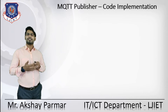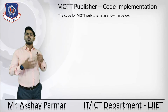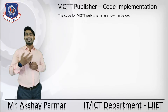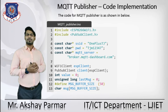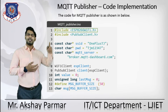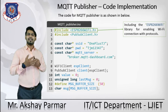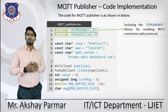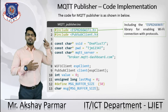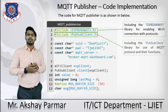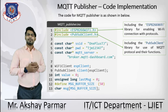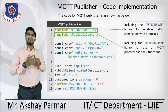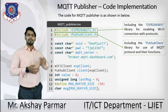Let's see how the MQTT publisher code is implemented. When working with the MQTT protocol, here's how the code looks. The code for the MQTT publisher is shown in this figure. We include a header file that enables the Wi-Fi connection for the protocol. Without importing this header file, we cannot use Wi-Fi protocols. We also include the PubSubClient library header file, which provides the MQTT protocol functions.